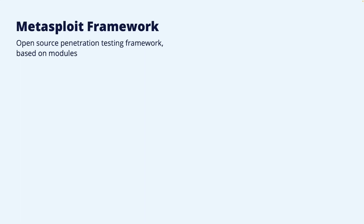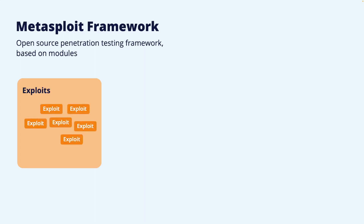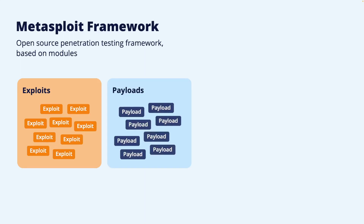Metasploit is based on modules and anyone can contribute new modules. There are a few different types: exploit modules which can be used against specific vulnerabilities, and payload modules. Since these modules are separated from each other they can be combined in different ways — one exploit can be used with one of several different payloads to achieve the goals of the attack. A common payload is to open a command shell on the vulnerable computer.